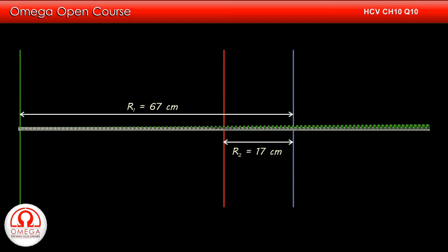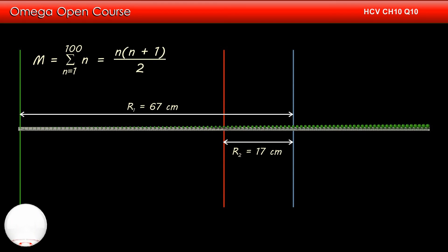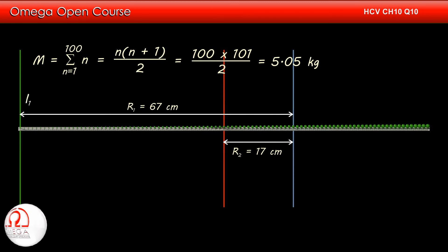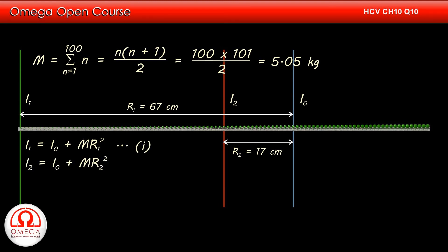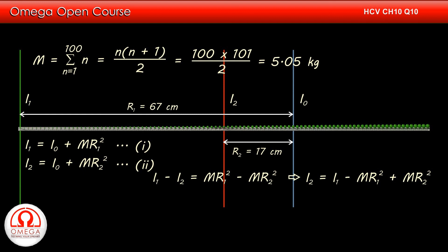Let these distances be denoted by r1 and r2 respectively. The mass of this system is summation of n from 1 to 100. Summation of n = n(n+1)/2; putting n = 100, we get 100 × 101/2 grams, or 5.05 kg. Let this mass be denoted by M. Denoting the moment of inertia about the left end as I1 = 2.55 kg m², about the perpendicular bisector as I2, and about the center of mass as I₀: by the parallel axis theorem, I1 = I₀ + Mr1², and similarly I2 = I₀ + Mr2². Subtracting, we get I1 − I2 = Mr1² − Mr2², so I2 = I1 − Mr1² + Mr2².